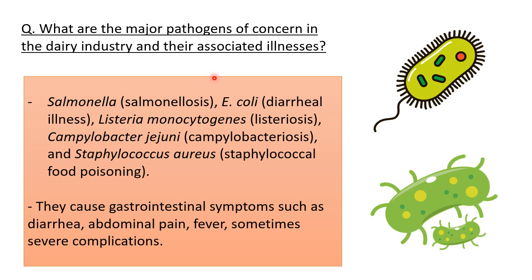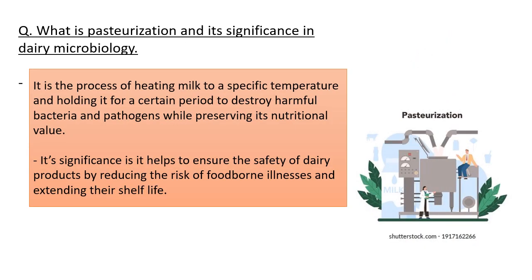What are the major pathogens of concern in the dairy industry and their associated illnesses? There are many pathogens — for an interview, list at least three. You can mention Salmonella, which causes salmonellosis; E. coli, which causes diarrheal illness; Listeria monocytogenes, which causes listeriosis; Campylobacter jejuni; and Staphylococcus aureus. They cause gastrointestinal symptoms such as diarrhea, abdominal pain, sometimes fever, and in some cases severe complications.